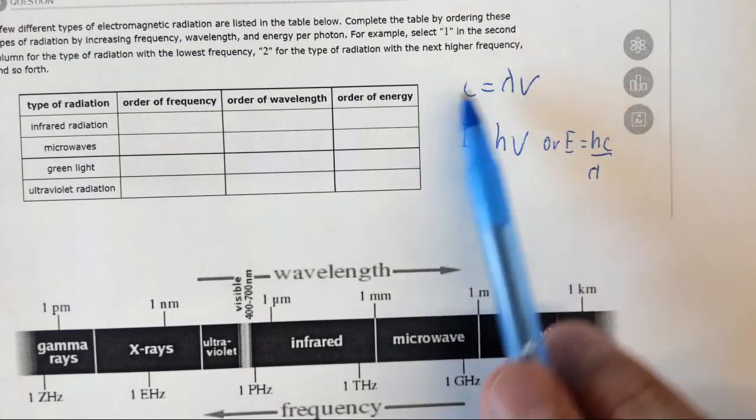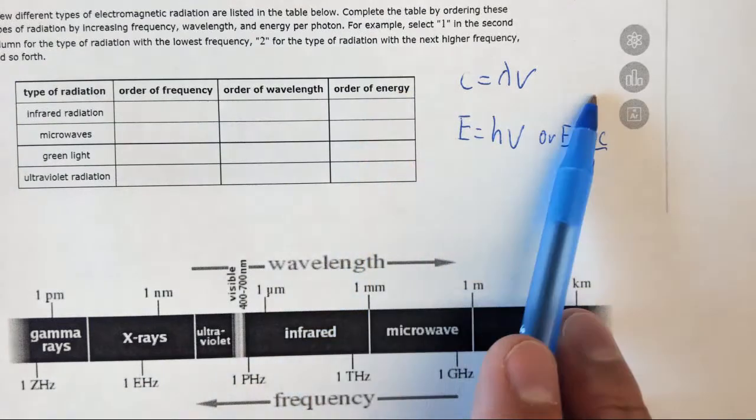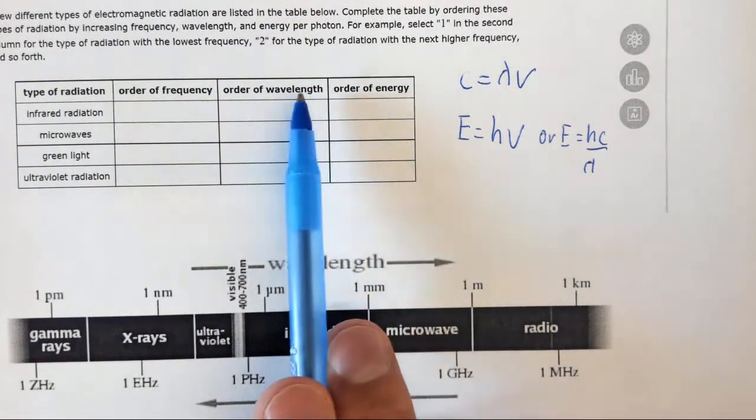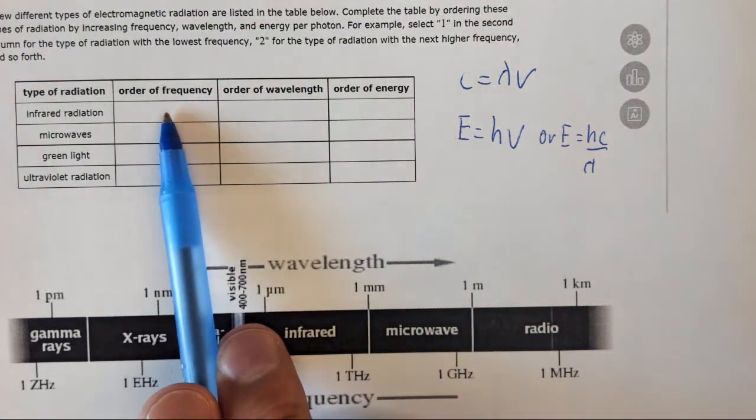So if you know any one of these things—if you know the frequency, if you know the wavelength, if you know the energy—you can calculate the other two. So if you know just frequency you can calculate wavelength and energy. If you know wavelength you can calculate frequency and energy. And if you know energy you can calculate wavelength and frequency.